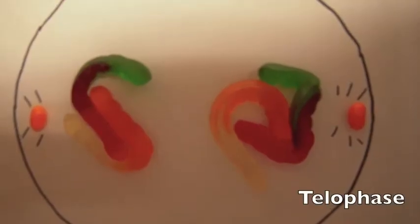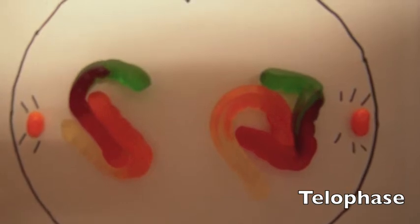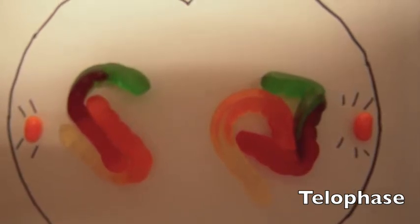Here, in telophase, two daughter nuclei form in the cell. This division of one nucleus into two genetically identical nuclei completes the mitotic phase of the cell cycle.